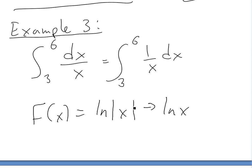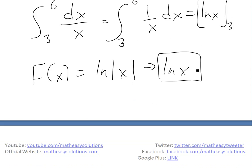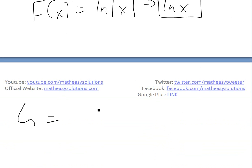We don't need to worry about the absolute value. So we plug this in: ln x from 3 to 6.